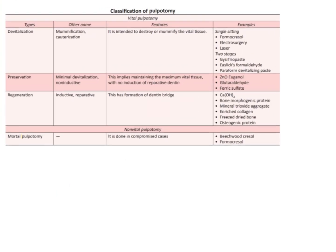What is important from the topic of pulpotomy is the various types of pulpotomy — this is a very important question frequently asked in examinations. The various types of pulpotomies and the materials used for these pulpotomies — for example, formacresol, zinc oxide eugenol — can be asked in the form of: if beechwood creosol is used as the material for the pulpotomy, what type of pulpotomy was carried out? The answer would be mortal pulpotomy. This is a very important table of the classification of pulpotomy. You also need to know the indications, contraindications, and procedures for each of the different pulp therapies.